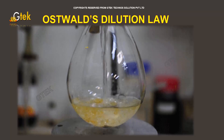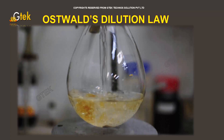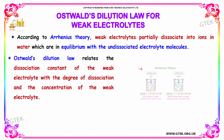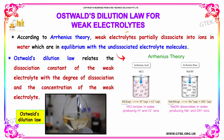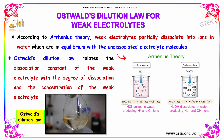Oswald's Dilution Law for Weak Electrolytes: According to Arrhenius' theory, weak electrolytes are partially dissociated into ions in water, which are in equilibrium with the undissociated electrolyte. Oswald's Dilution Law relates the dissociation constant of the weak electrolyte with the degree of dissociation and the concentration of the weak electrolyte.